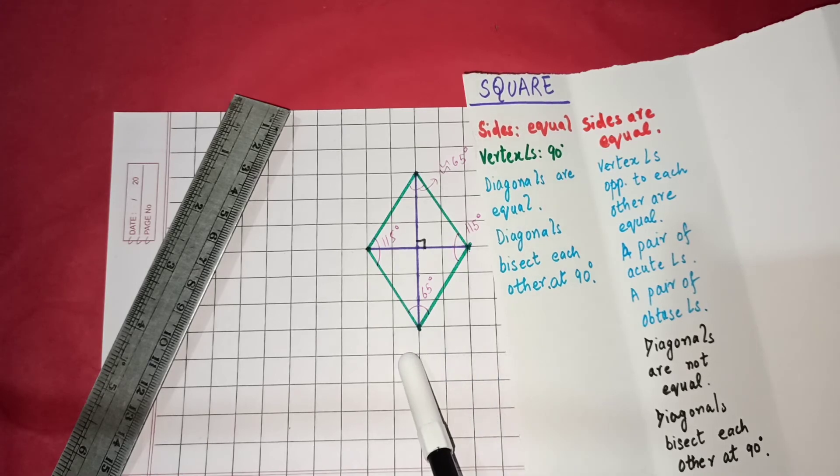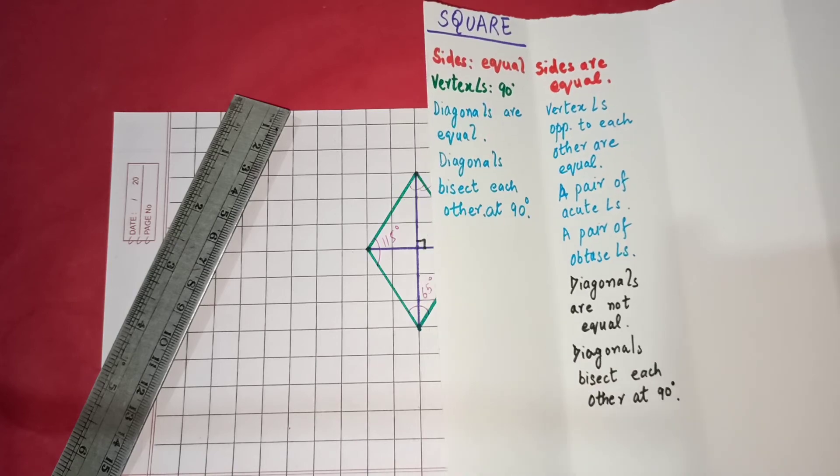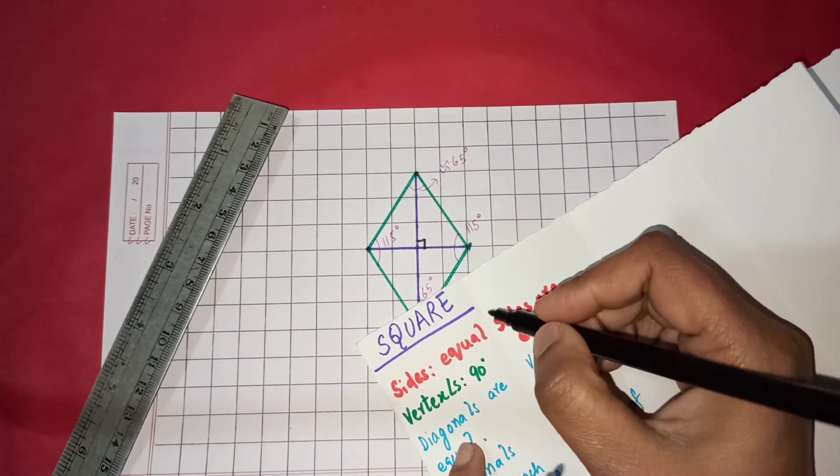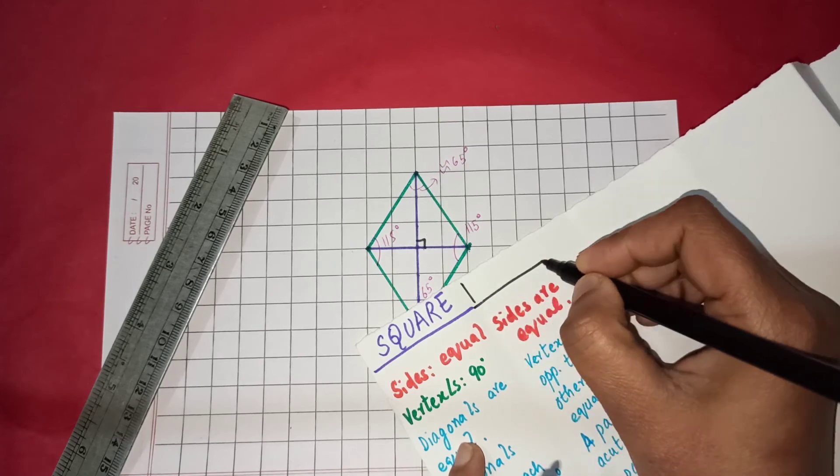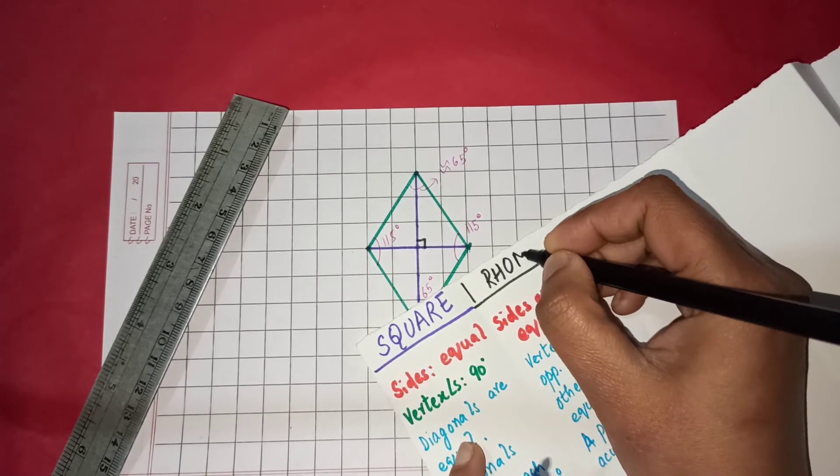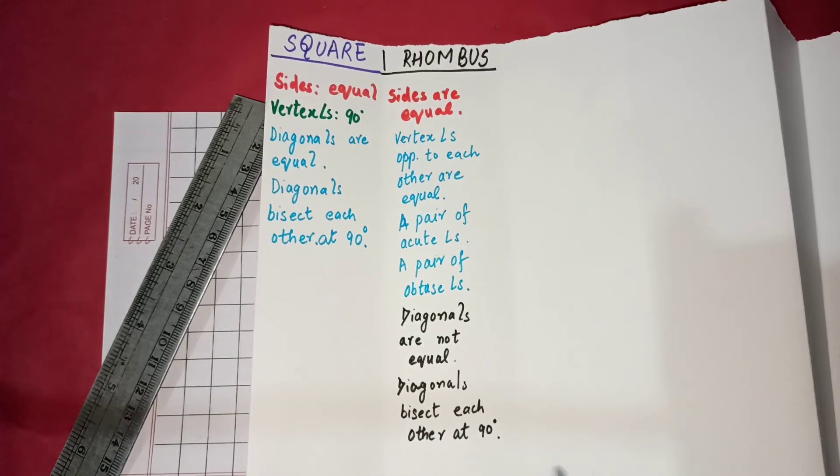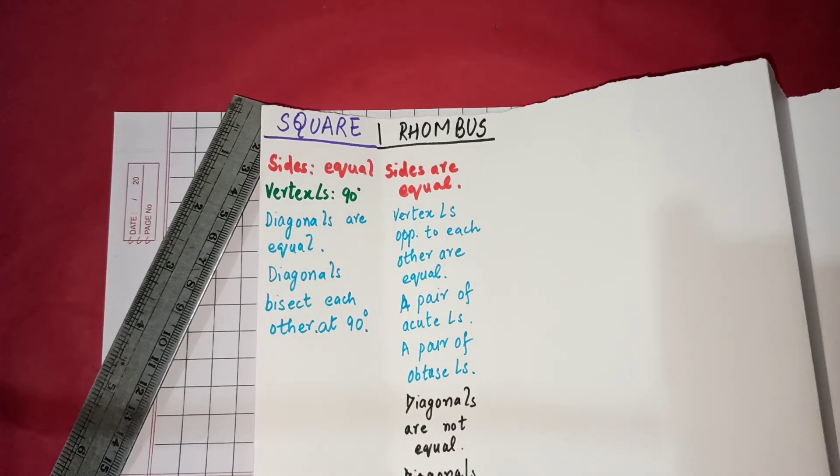Now you must be thinking what is the name of this next quadrilateral. Yes. It is a rhombus. It is known as a rhombus. So I am going to name it. This was my second video in the series of quadrilaterals. And we have done two quadrilaterals - one square and rhombus.